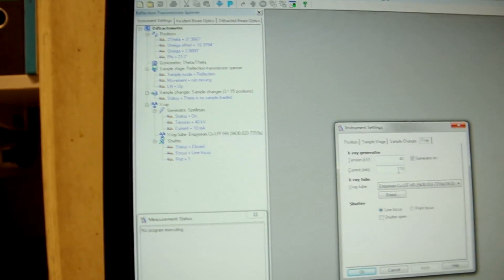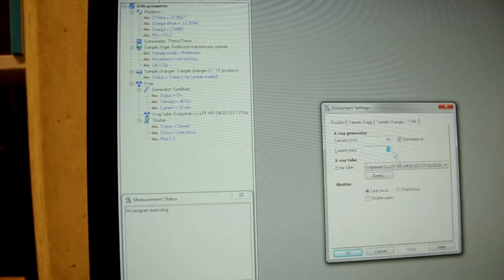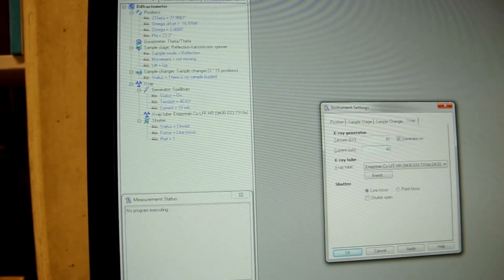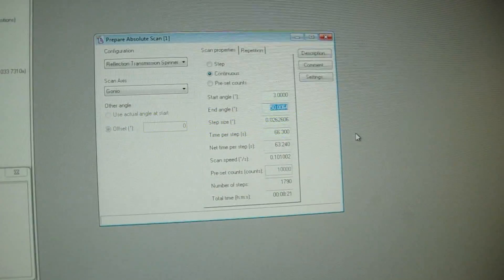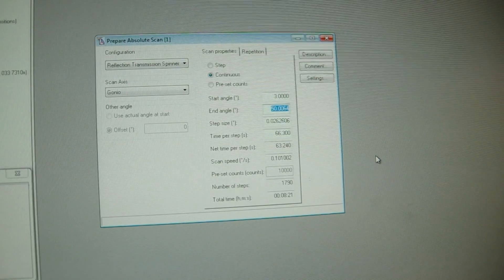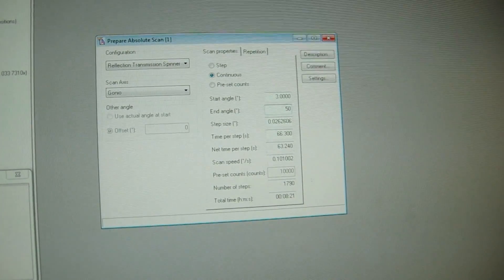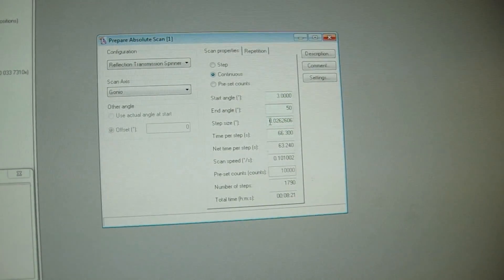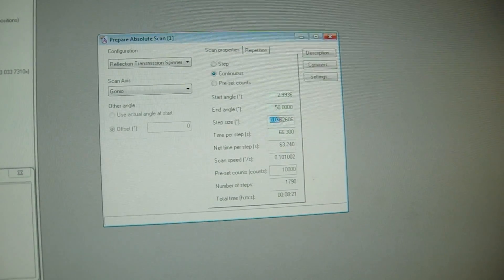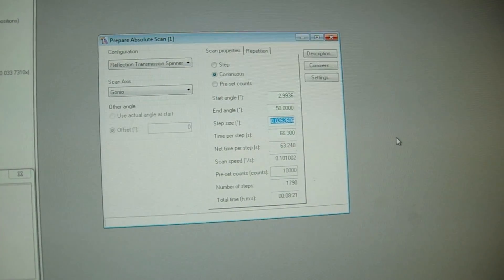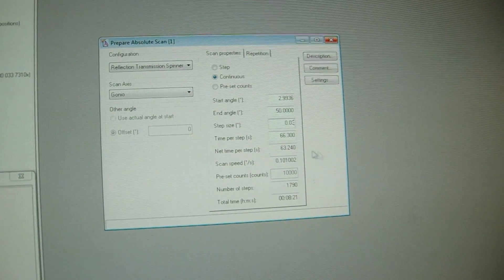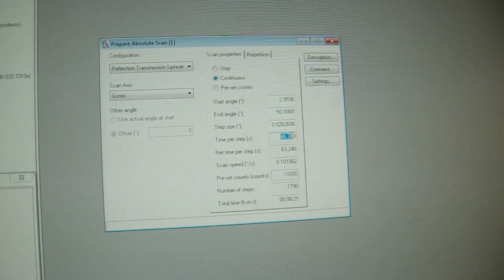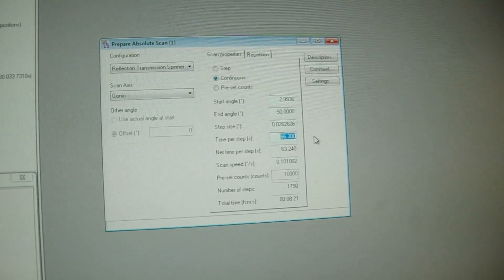To begin the measurement, the beam current is adjusted to 40mA. Different measuring programs can be set up in absolute scan. The start angle, end angle, step size, time per step, scan speed, etc. can be optimized to achieve best results. Generally, smaller step size and longer scanning time gives better results.